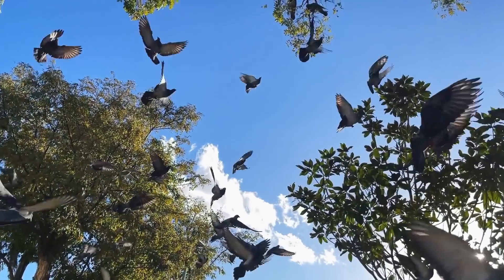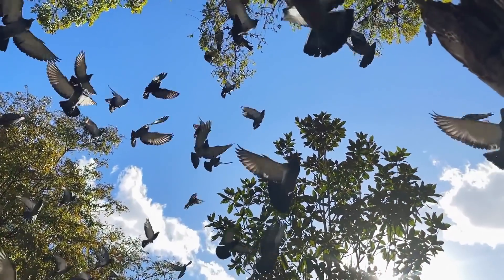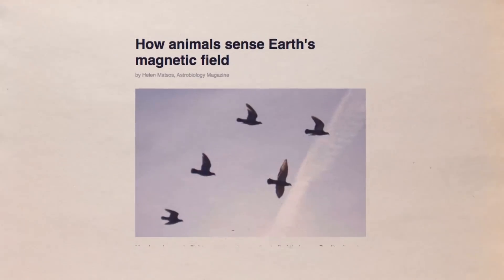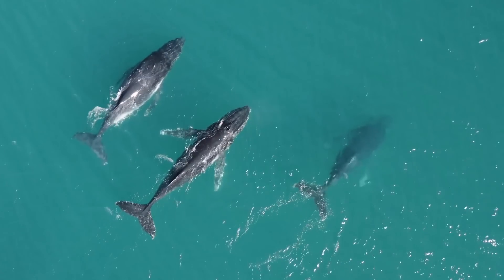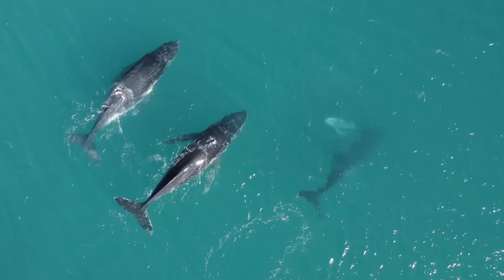During geomagnetic storms, for example, homing pigeons have trouble navigating because the magnetic fields they utilize as a guide are disrupted. Whales can also congregate in large groups on the shore.